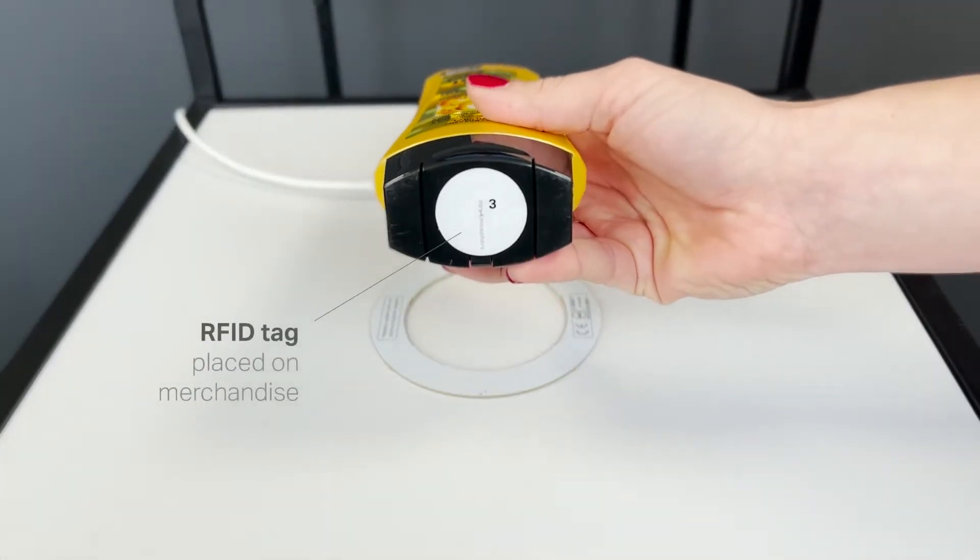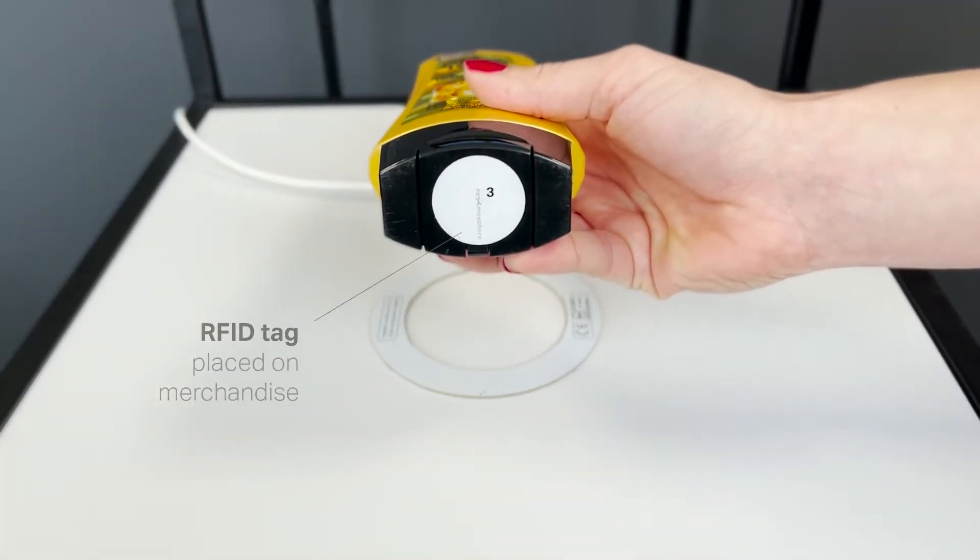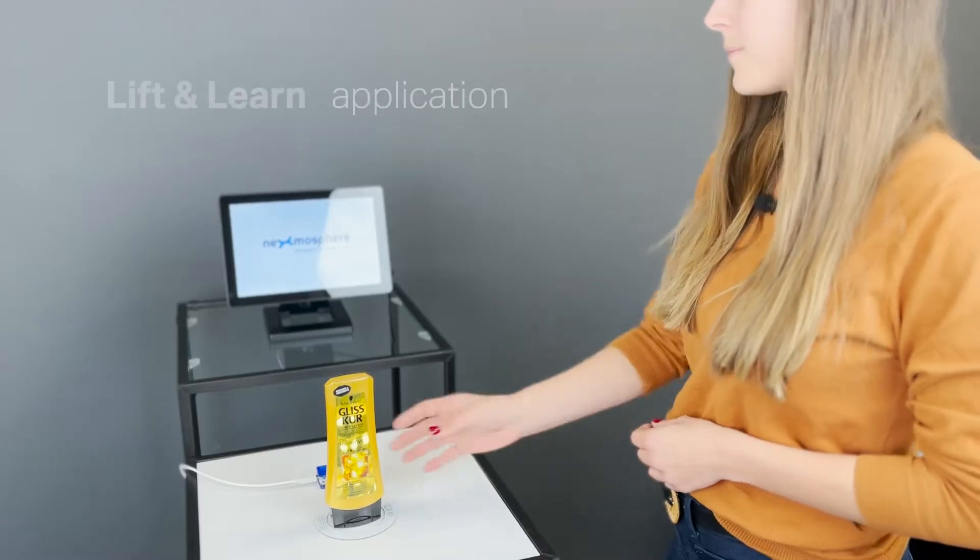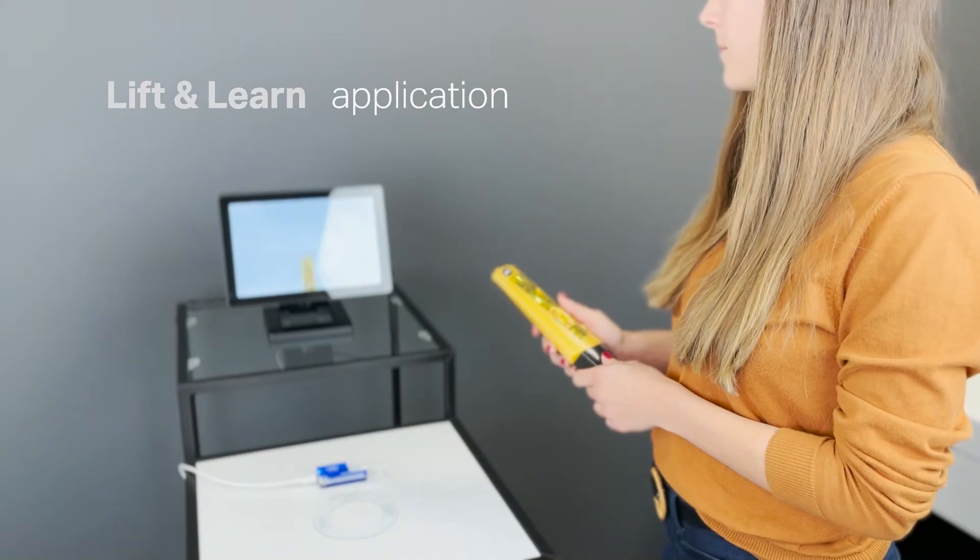Typically, the tags are placed on the bottom of the merchandise, for example, this shampoo bottle, to create a lift and learn experience whenever a shopper picks up the merchandise.